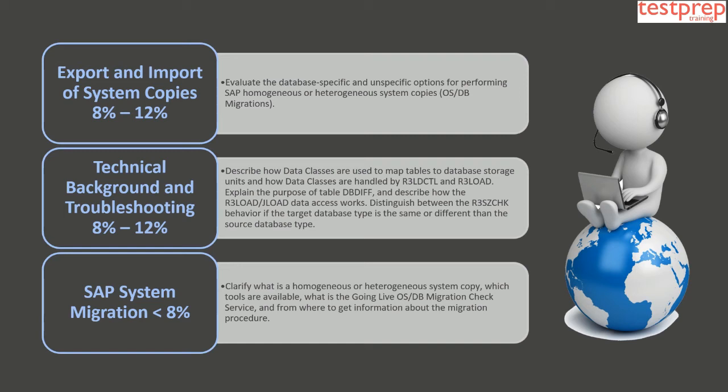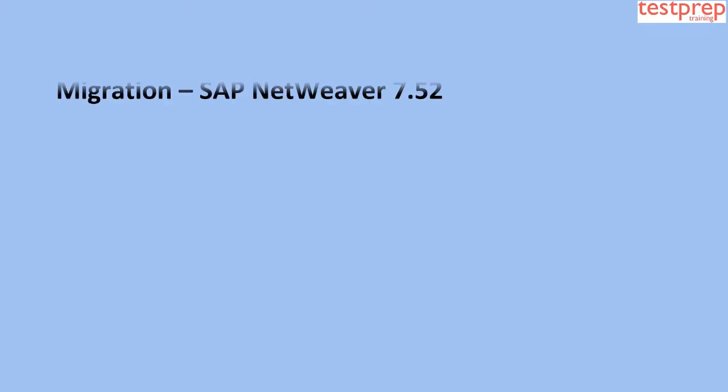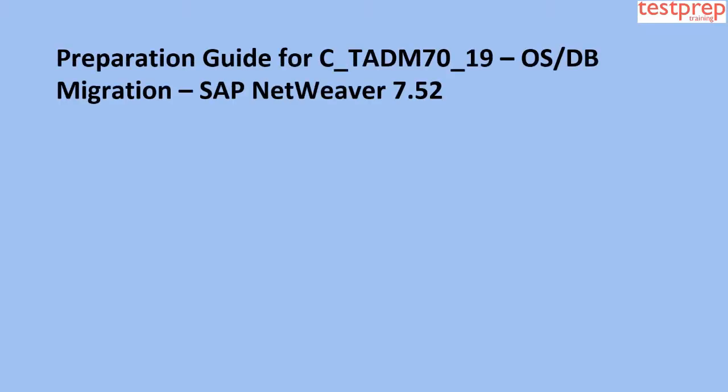Domain 8: SAP System Migration, comprising less than 8% weightage. This clarifies what homogeneous and heterogeneous system copies are, which tools are available, what the Going Live OS or DB Migration Check Service is, and where to find information about the migration procedure.